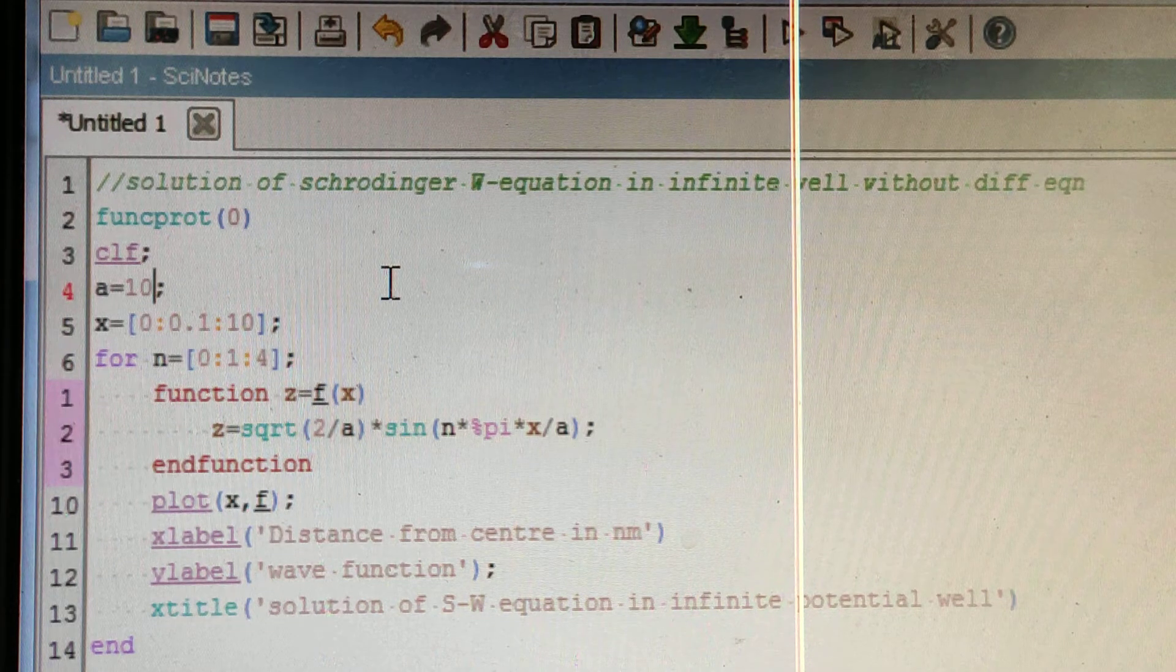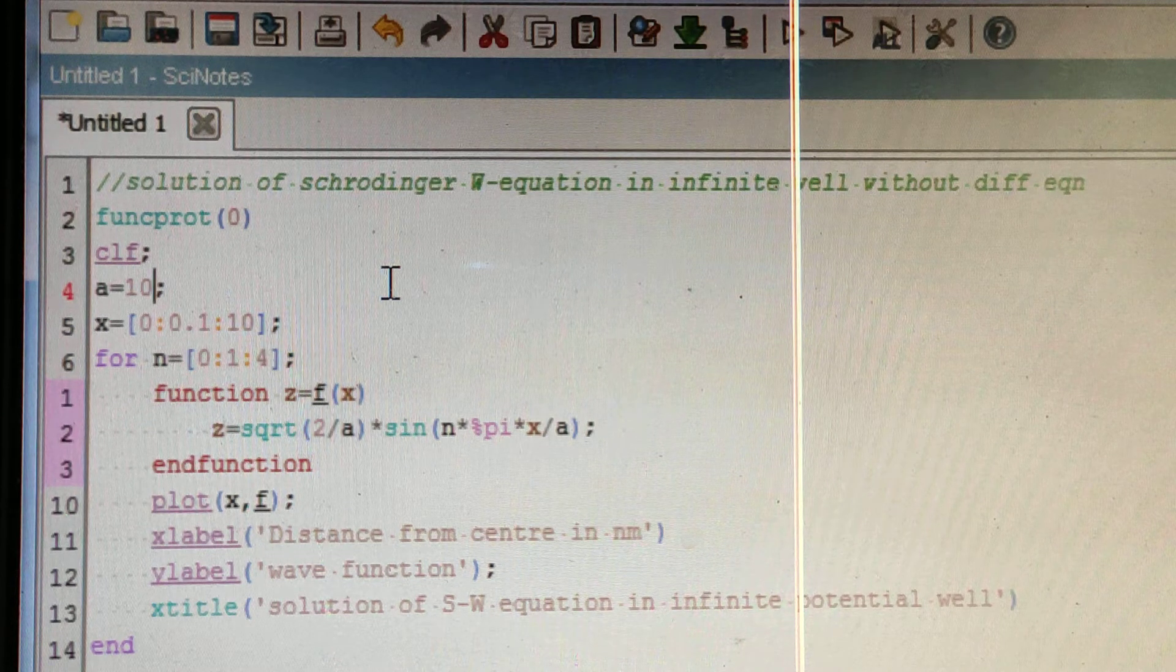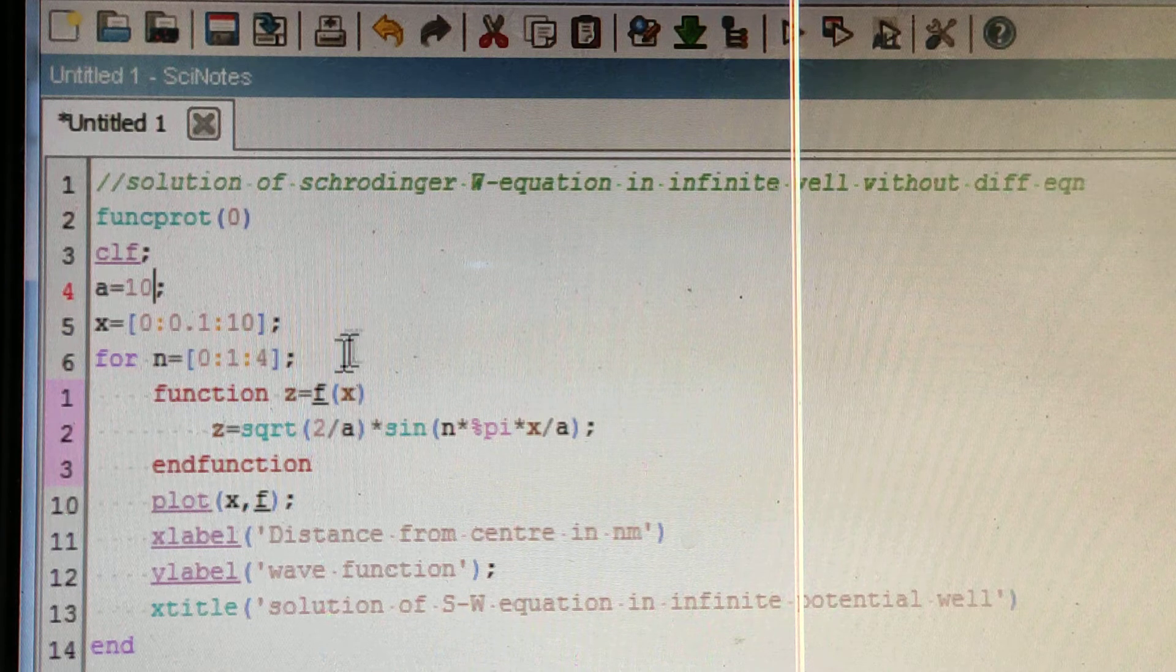For n, I am taking 0 to 4 with step length 1. That means n equals 0, n equals 1, n equals 2, n equals 3, n equals 4.